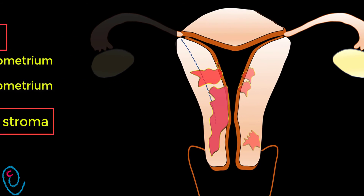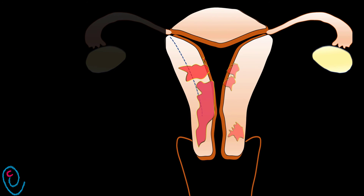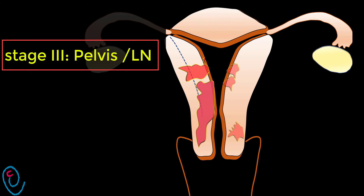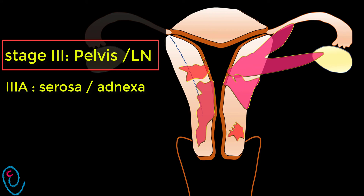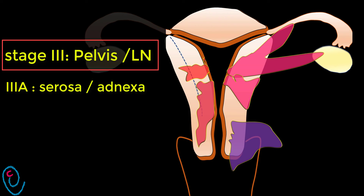In Stage 3, the tumor extends locally outside the corpus and cervix. In 3A, it invades the serosa and/or adnexum. In 3B, it invades the vagina and/or parametrium.